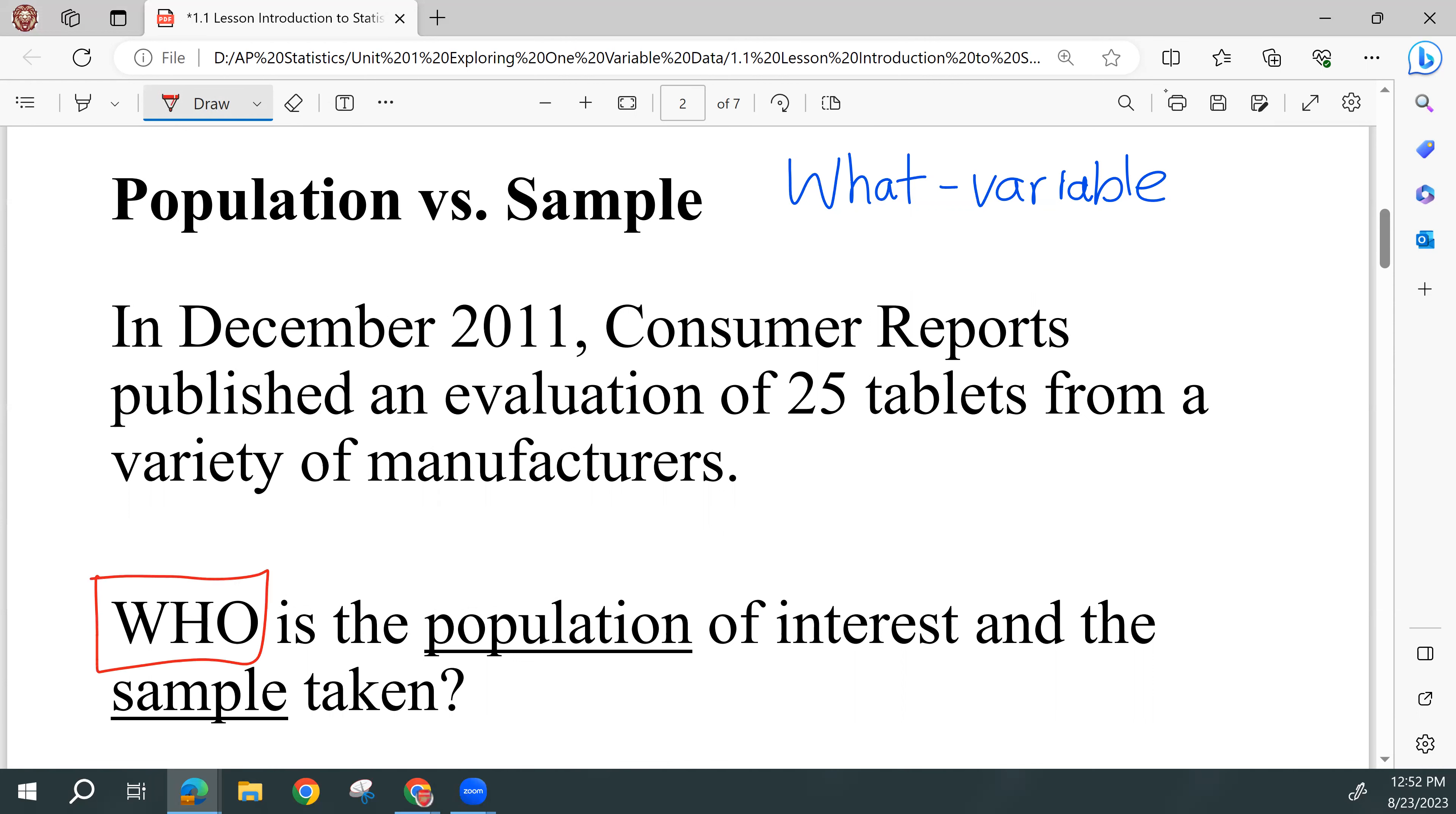And who doesn't always mean people. In a lot of cases it does, but we can sample machines, vehicles, animals, we can sample cereal boxes. So who doesn't always refer to a human, but a lot of times it does. And so usually we are trying to find out about a large group, and that large group we call a population.